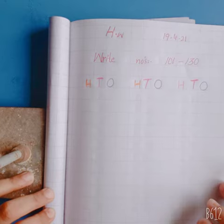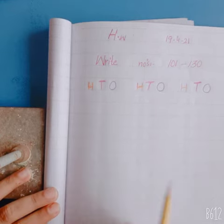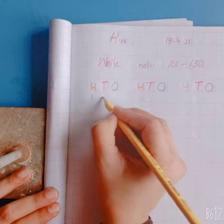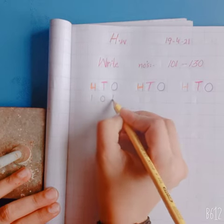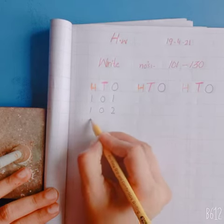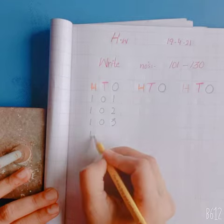On your copy, let's write the numbers from 101 to 130. 101, 102, 103, 104.